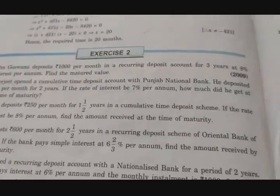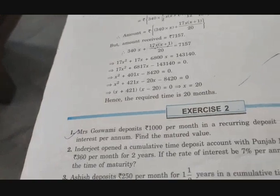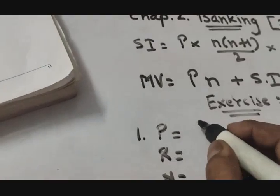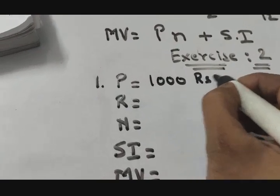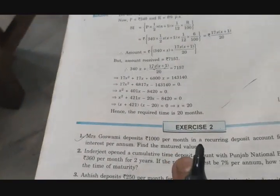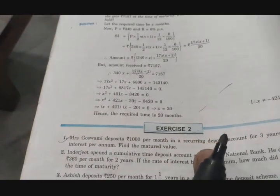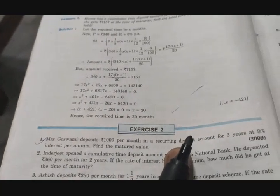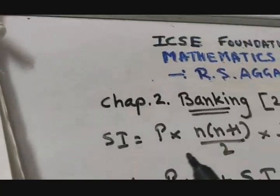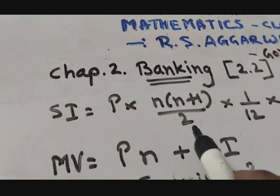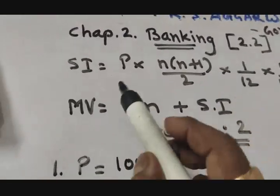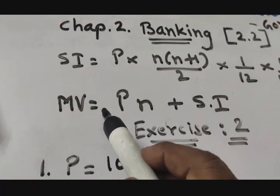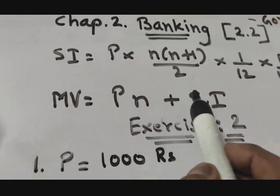So we will write down the data that has been given to us. How much principal amount is she depositing? She is depositing 1000 rupees every month. It says per month, so every month. It is in a recurring deposit. Whenever recurring deposit comes, it is related to SI equals P times n(n+1)/2 times 1/12 times R/100, and for finding maturity value, maturity amount equals P times n plus SI.